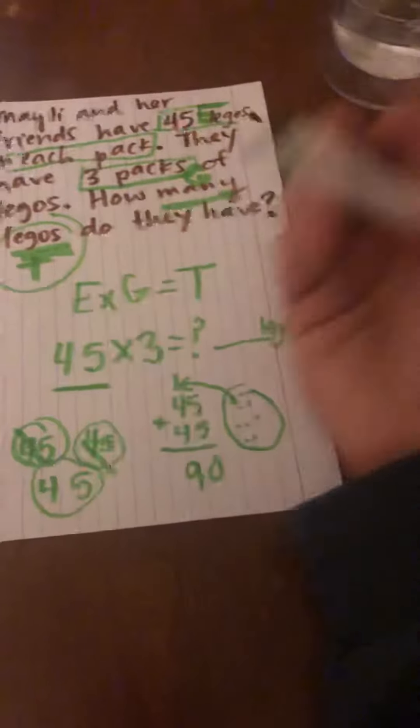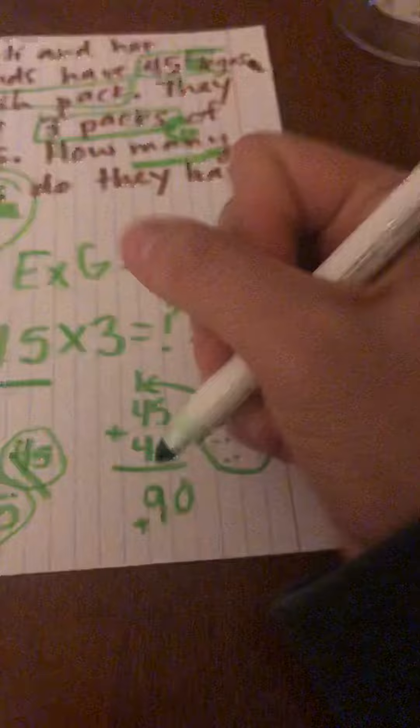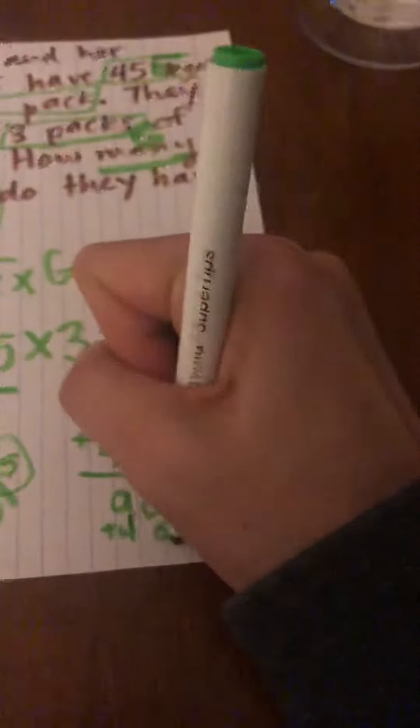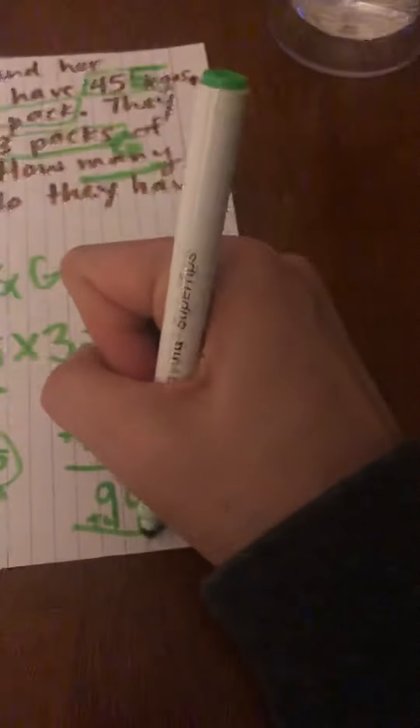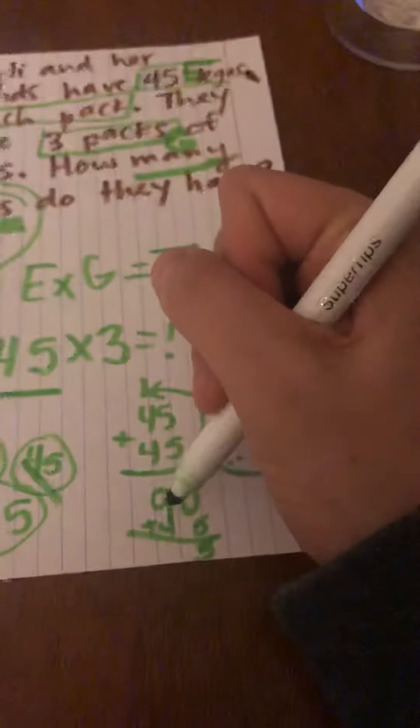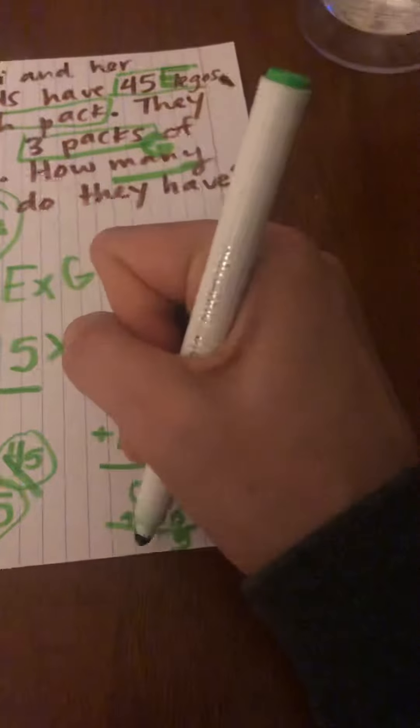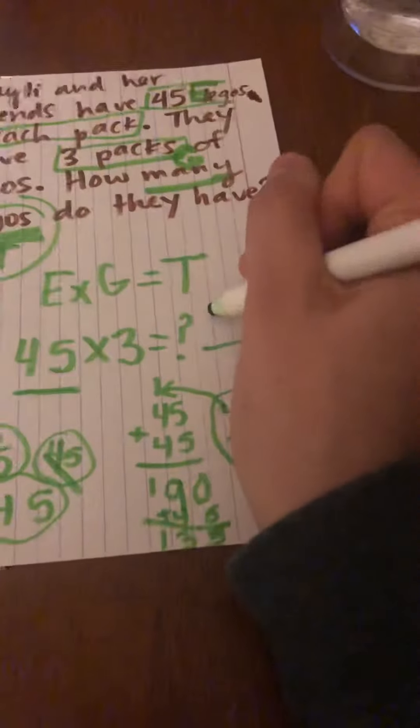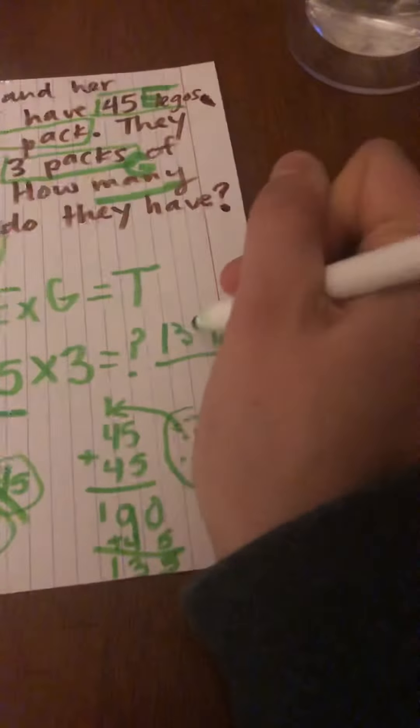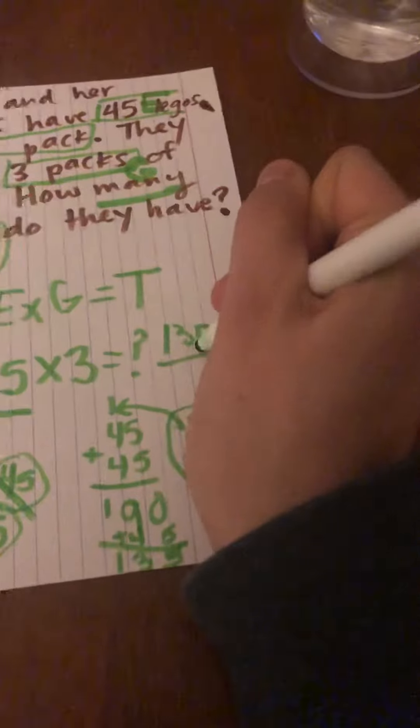Now, I just have to add my last 45 to get my total. What is 90 plus 45? In the ones place, we get five, because five plus zero is five. And then in the tens place, we have nine plus four... nine, ten, eleven, twelve, thirteen. Don't forget to regroup your hundreds. Bring it down. That gives us 135 Legos.